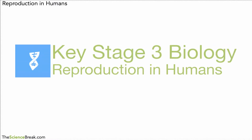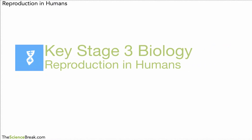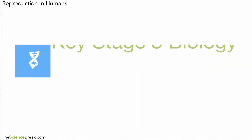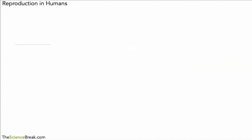Hello and welcome. This is a Key Stage 3 biology video for reproduction in humans. Remember, a work-along sheet is in the description below. We are looking at humans as an example of a mammal, so this could be pretty much the same in most, if not all, mammals.